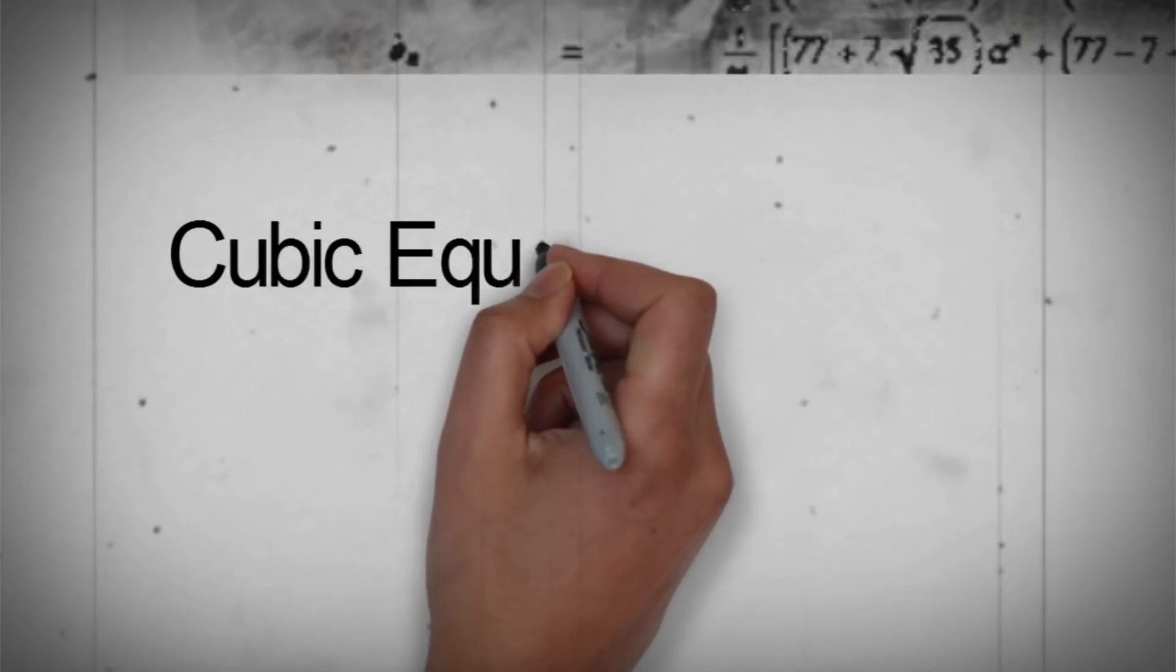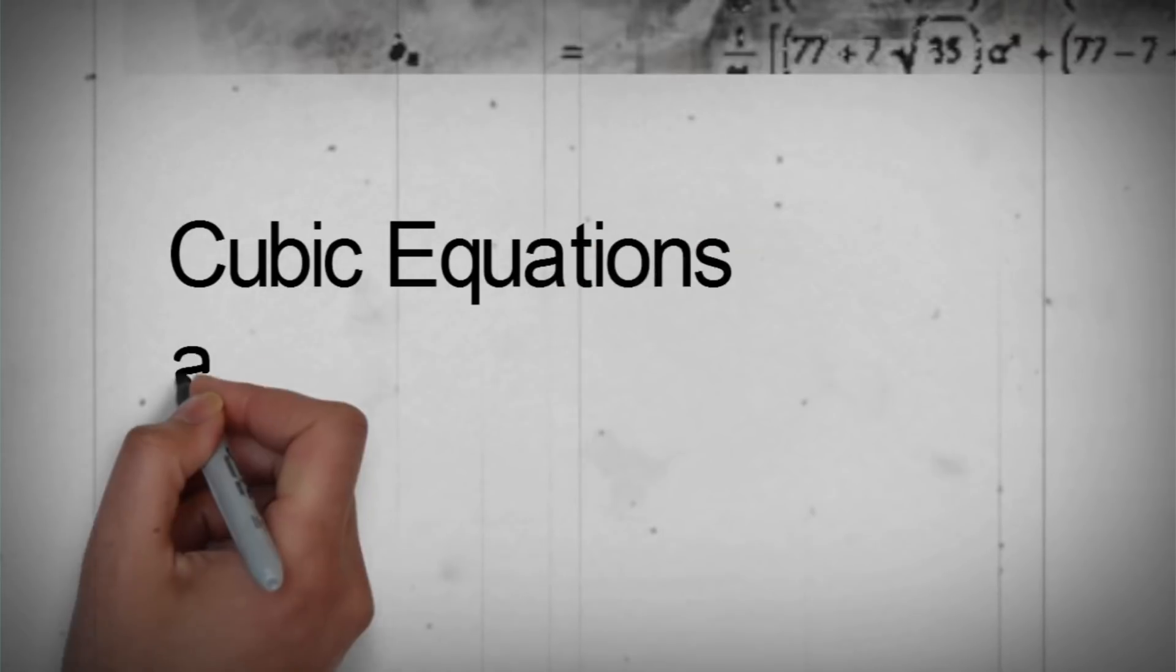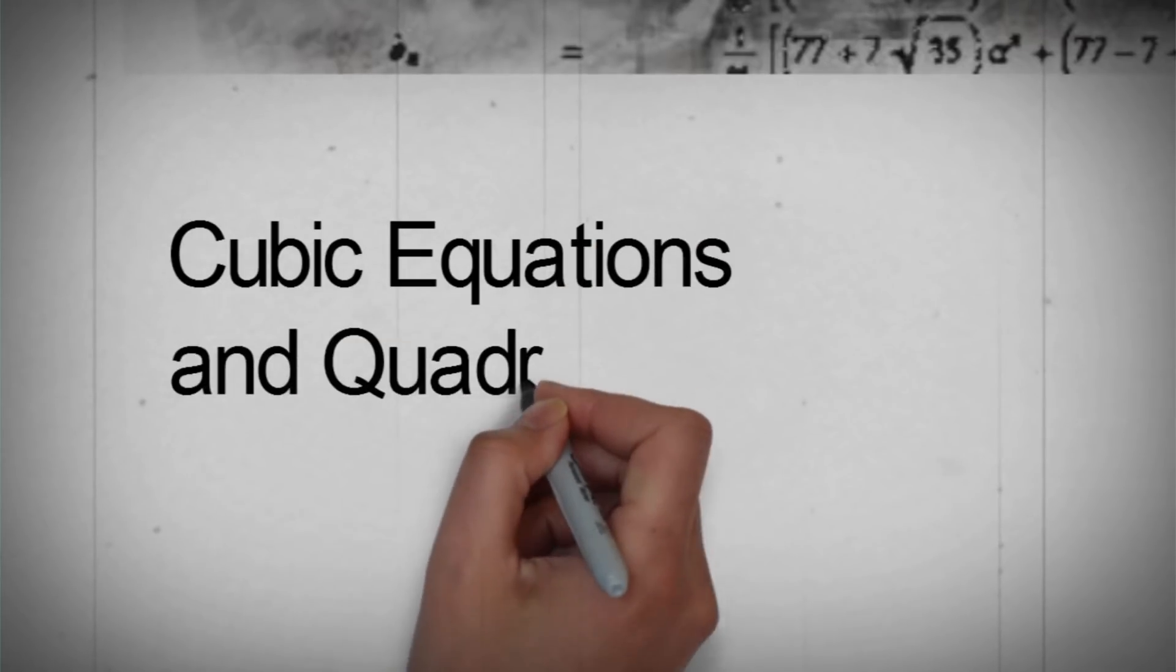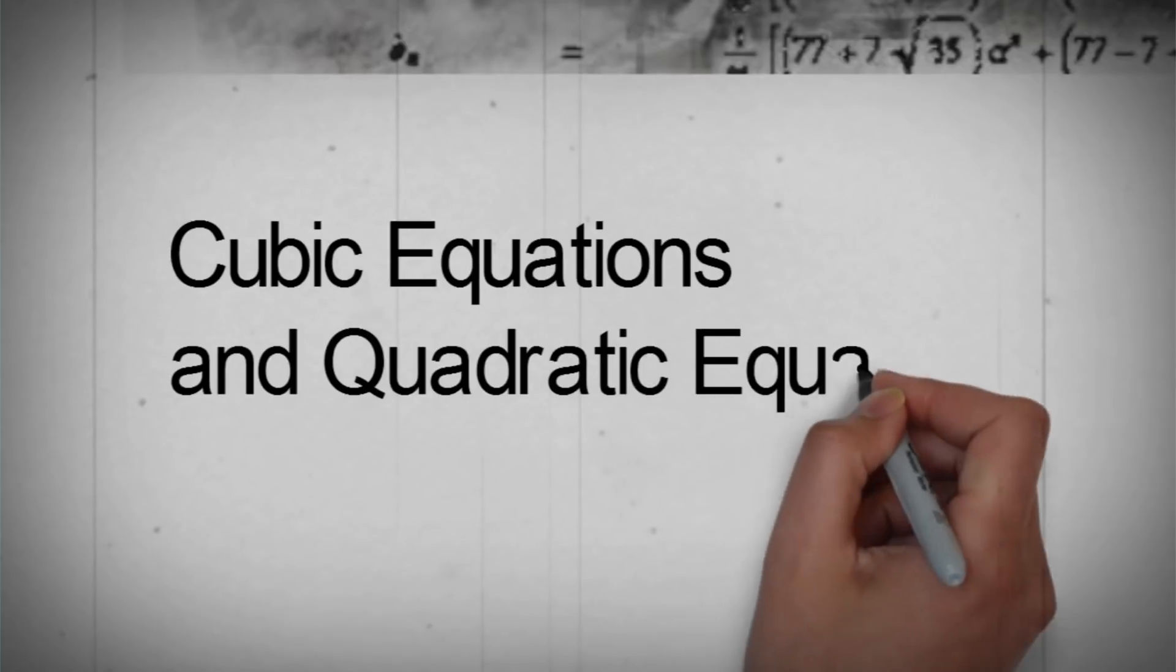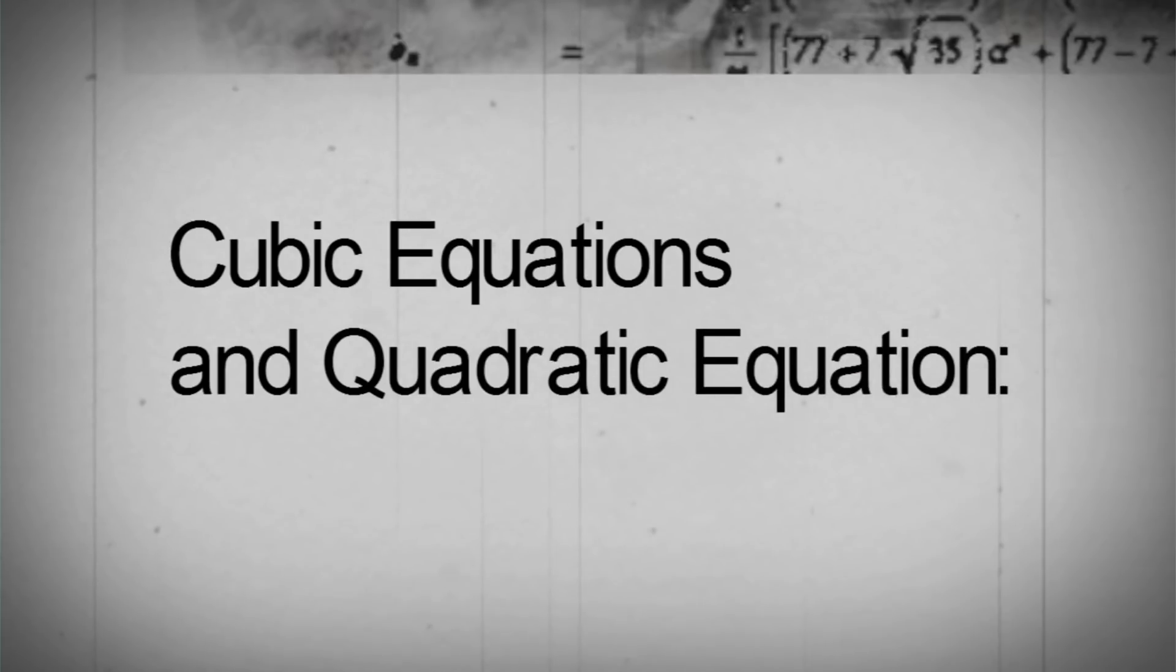Ramanujan showed how to solve cubic equations in 1902 and he went on to find his own method of solving quadratic equations.